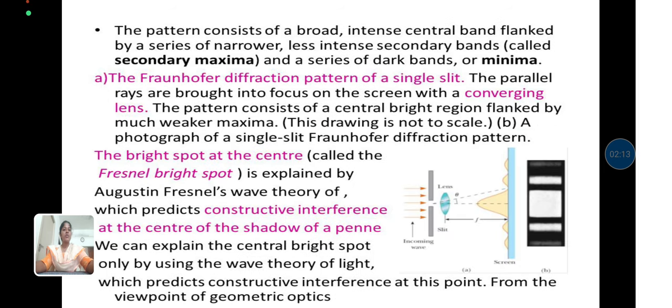The pattern consists of a broad, intense central band flanked by a series of narrower, less intense secondary bands and a series of dark bands or minima. The diffraction pattern of a single slit consists of a central bright region flanked by much weaker maxima.